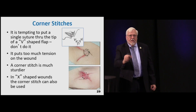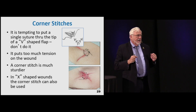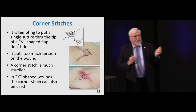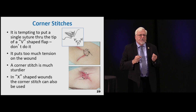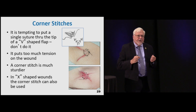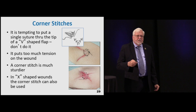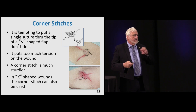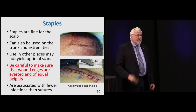With V-shaped lacerations, you might feel like grabbing the top part of the V and pulling it up, but it will usually tear and creates a lot of tension. Use corner stitches instead - much sturdier, particularly in X-shaped wounds as well. The corner stitch should be used in those situations. Remember, it's all about tension.